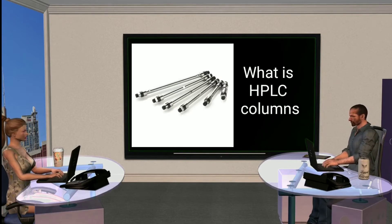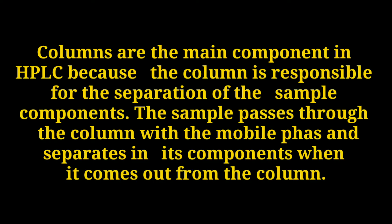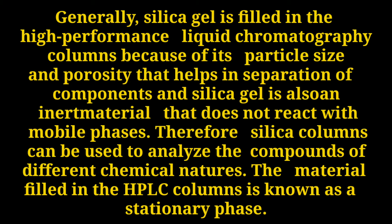Today in this video I am going to tell you about HPLC columns — what is an HPLC column and how many types of HPLC columns there are. Columns are the main component in HPLC because the column is responsible for the separation of sample components. The sample passes through the column with the mobile phase and separates into each component when it comes out. Generally, silica gel is filled in the HPLC column because of its particle size and porosity that help in separation of components. Silica gel is also an inert material that does not react with the mobile phase, therefore silica columns can be used to analyze compounds of different chemical nature. The material filled in the HPLC column is known as the stationary phase.